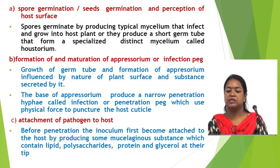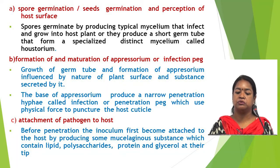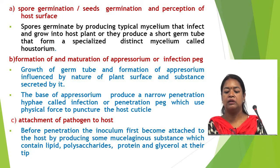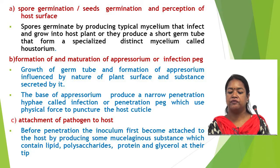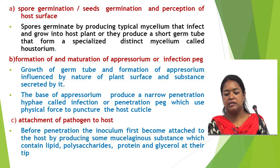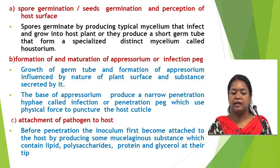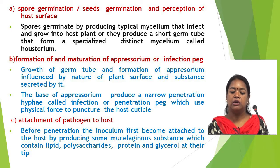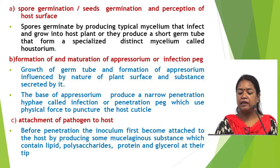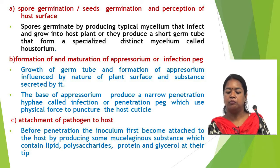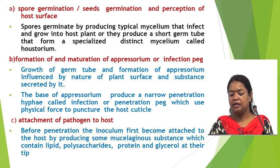Spore germination produces typical mycelium that infects and grows into the host plant, or produces a short germ tube that forms a specialized distinct structure called haustorium. In the formation and maturation of the appressorium or infection peg, the growth of the germ tube and formation of appressorium are influenced by the nature of the plant surface and substances secreted by it. The base of the appressorium produces a narrow penetration hyphae called the infection or penetration peg, which uses physical force to puncture the host cuticle. Before penetration, the inoculum first becomes attached to the host by producing some mucilaginous substance containing lipids, polysaccharides, proteins, and glycoproteins at their tip.